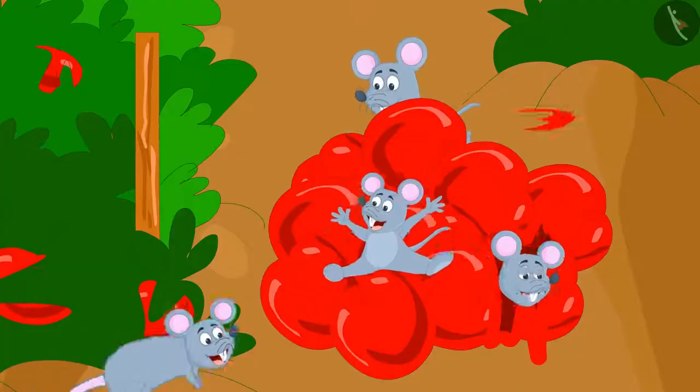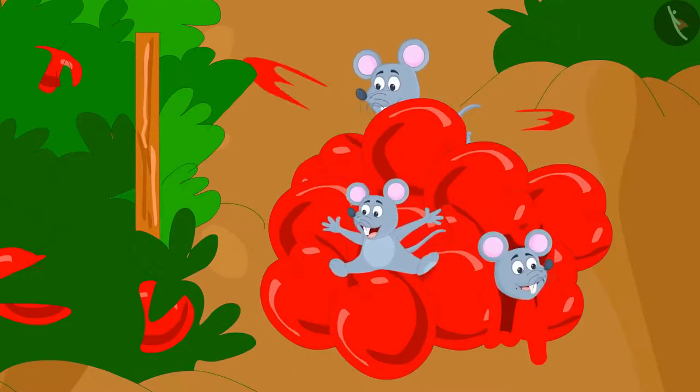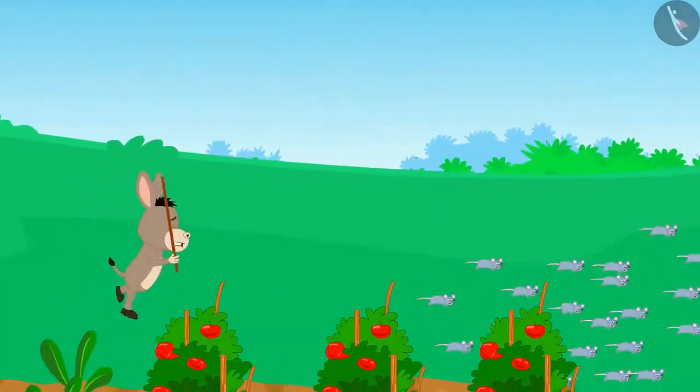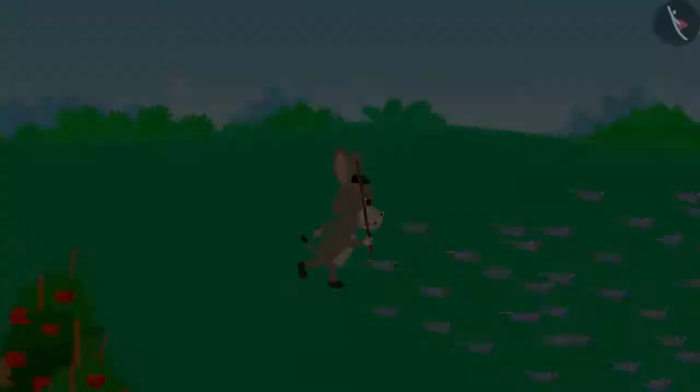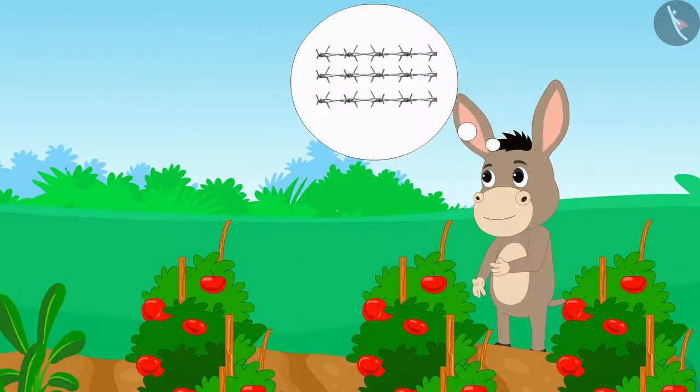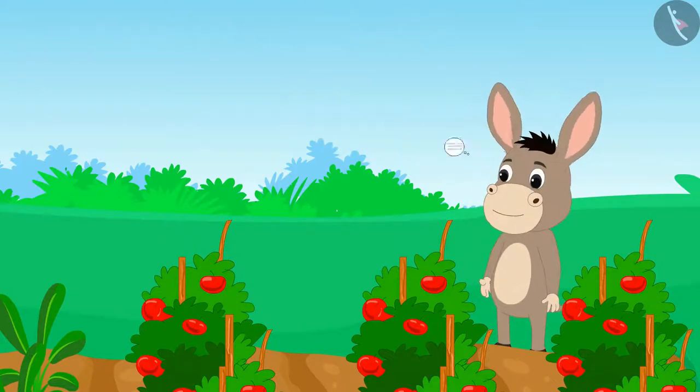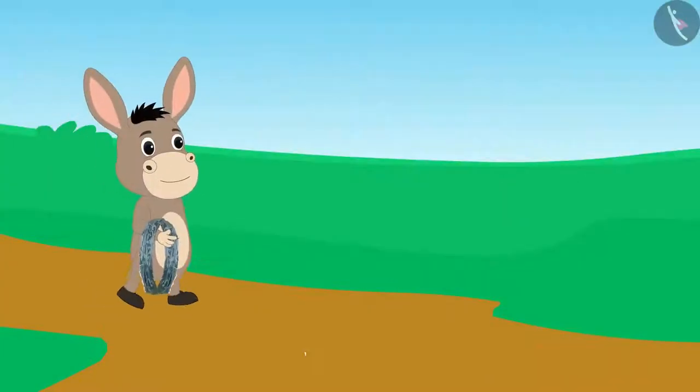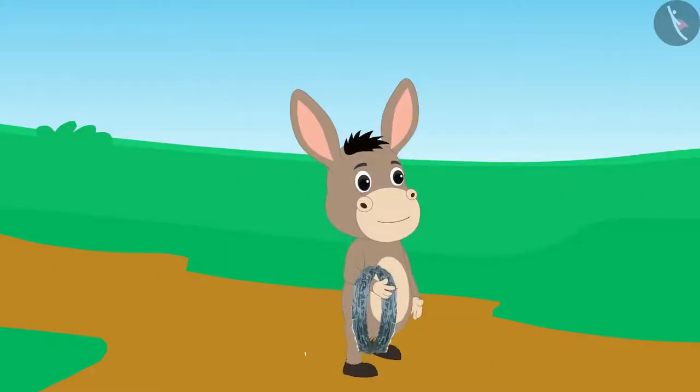Those mice were eating Bhola's tomatoes with great interest. Bhola drove the mice away and thought that he would make a barbed wire fence around his farm. He immediately brought the barbed wire from the market.